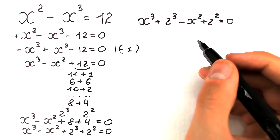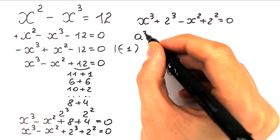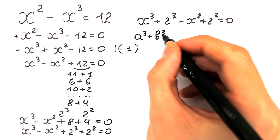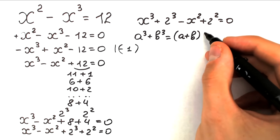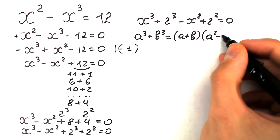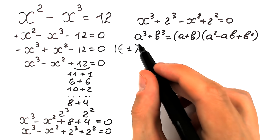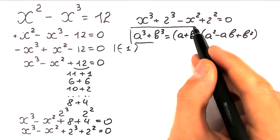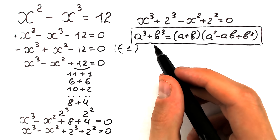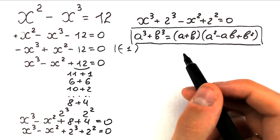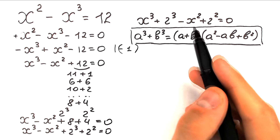Now we should apply our formula. For the sum of two cubes: a³ + b³ equals (a + b)(a² - ab + b²). Right here we have a sum of cubes, so we apply this formula. This is our really important cubic formula and we need it right now. Our next step is to add these two cubes using this formula.